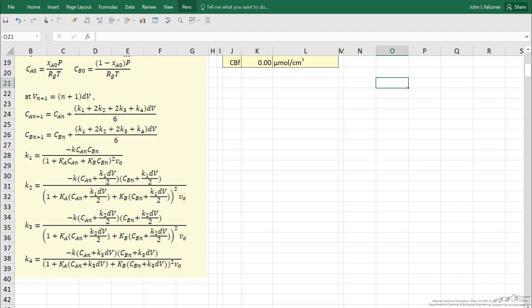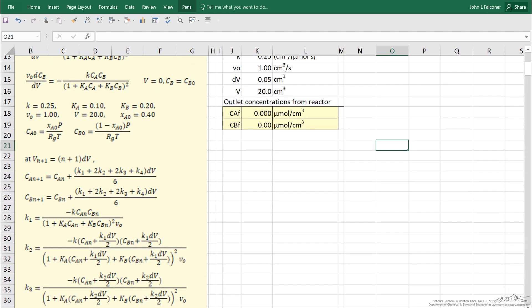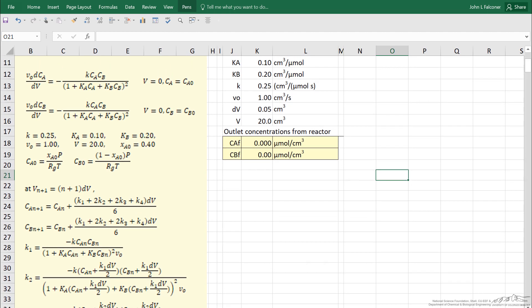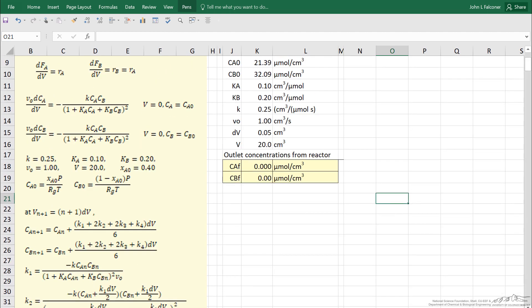These are the Runge-Kutta terms for fourth order, and this really works quite well in Excel. One constraint is we're using a fixed step size. Because of this, if the equations were stiff, we would not be able to solve them this way, but for a large number of problems, this works quite well.